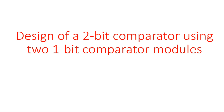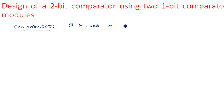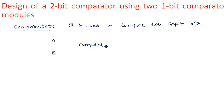In this video, I am going to explain how to implement a two-bit comparator using two one-bit comparators. Before going into the concept, let me explain what a comparator is. A comparator is a device used to compare two incoming bits. Whatever may be the size, the main purpose of a comparator is to compare the two incoming data based upon the two inputs.